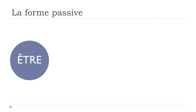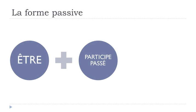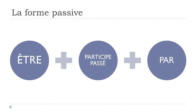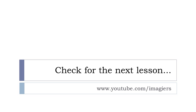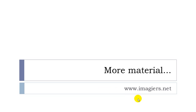So remember: être conjugated at the correct tense, then the participe passé, then par — don't forget par, it's quite important. Those are the three elements you need to construct la forme passive. I hope it was clear. Have a great day, and remember there are more videos on youtube.com/Imagier. Send me a message to tell me what you think about the videos. Bye-bye!